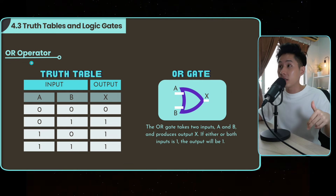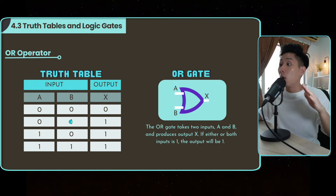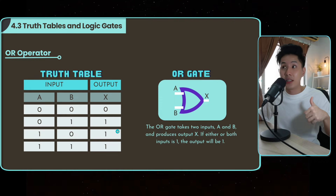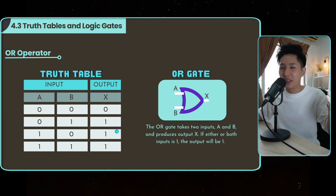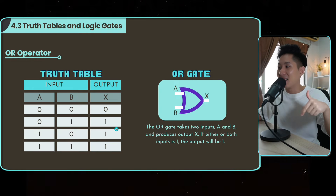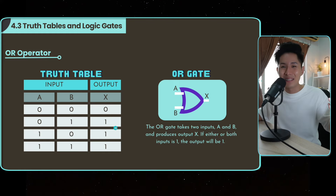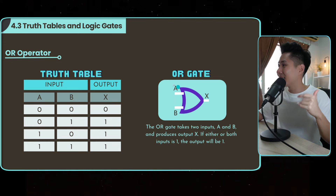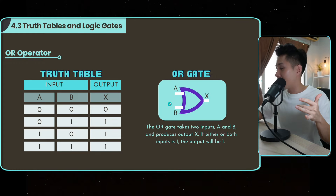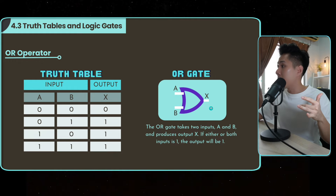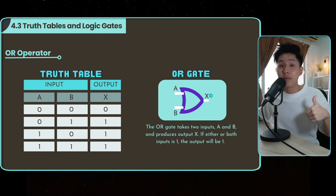The OR operator functions differently — only one input needs to be true for the output to be true. For example, either coffee or tea: if either one is on target, that means he's a coffee or tea person. This is the symbol for the OR gate, which is a little more aerodynamic compared to the AND gate. Similarly, they take two inputs and will produce an output of 1 if one of the inputs is 1.